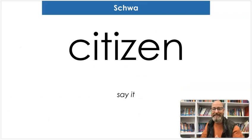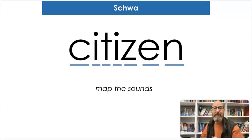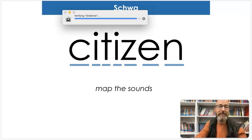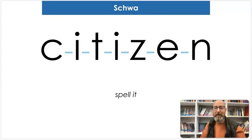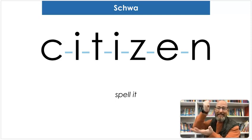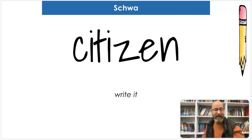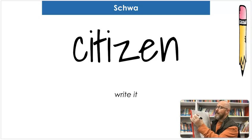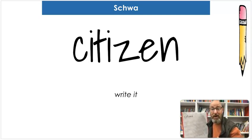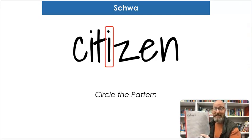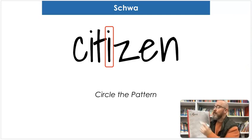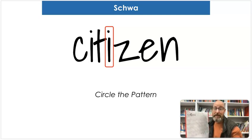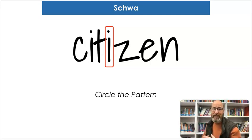Our first word is 'citizen.' Say citizen. Map the sounds: S-I-T-I-Z-I-N. Citizen. Spell it: C-I-T-I-Z-E-N. Citizen. And let's write it: C-I-T-I-Z-E-N. Now, where's the schwa? It's in that second I. It's the unstressed syllable. If I were to break that up into syllables — citizen — the reason that's a short I in 'sit' is because it's a closed syllable, and it's also more stressed than the middle one, which is not.